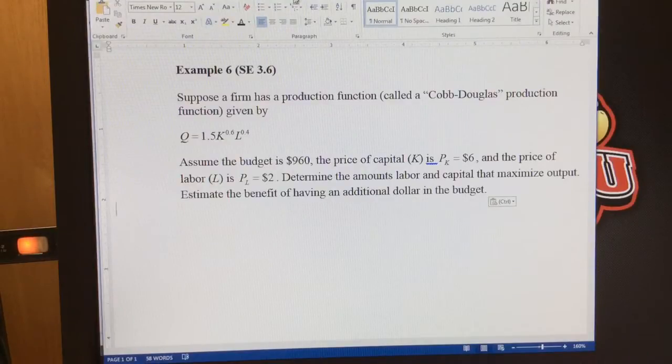So if our budget is $960, the price of capital is 6, the price of labor is 2. We need to determine the amounts of labor and capital to maximize output, and estimate the benefit of having an additional dollar in the budget.